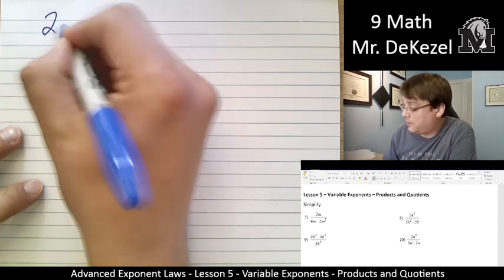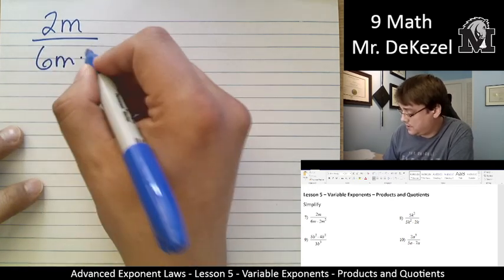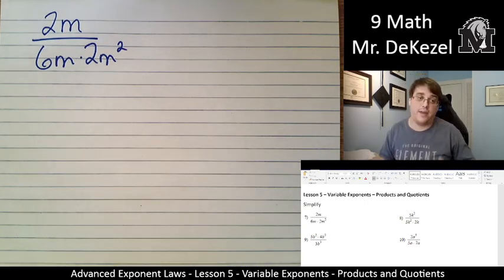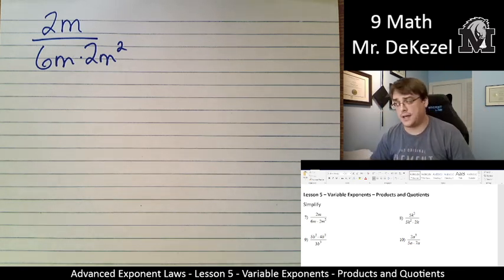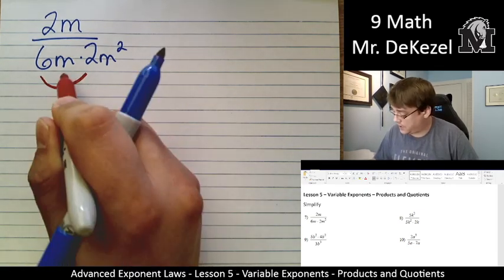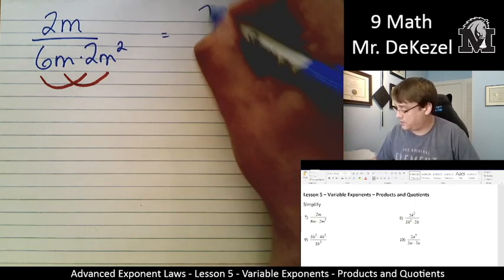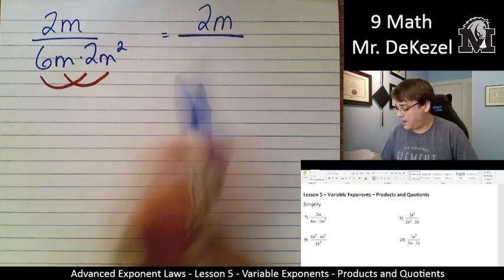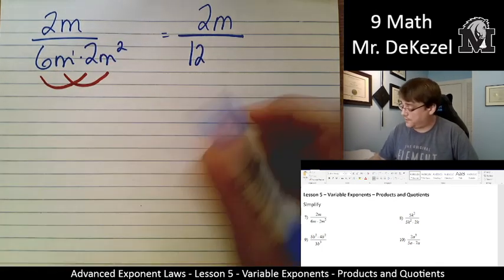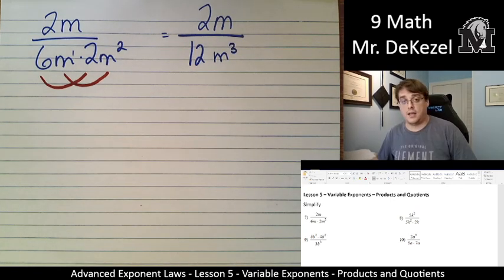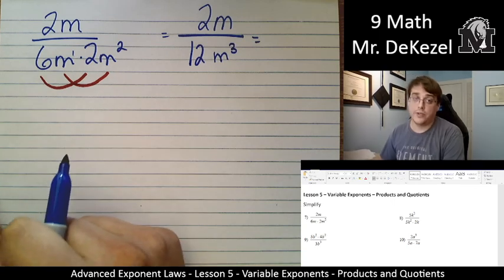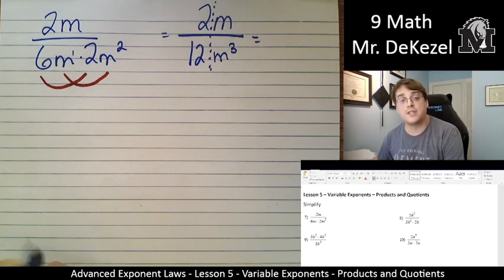First one we have 2m divided by 6m times 2m to the power of 2. We are going to keep the top and the bottom separate for a while and then we are going to divide them at the end but we're going to keep that general rule. We are going to multiply the numbers and we are going to multiply the variables. So what we have on top just stays the same. We got 2m and that's it divided by 6 times 2 is 12 and m to the power of 1 times m to the power of 2, that's m to the power of 3. And now since everything is done on the top and the bottom that we can do, we're going to go ahead and divide them. So 2 and 12 are like a fraction and we are going to reduce that fraction as much as we can. So we can divide both of them by 2 and get to 1 sixth.